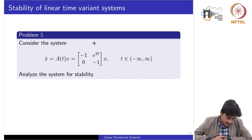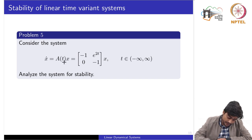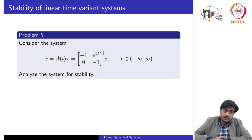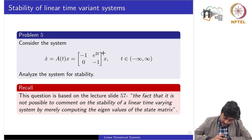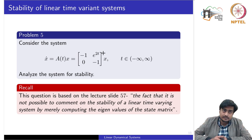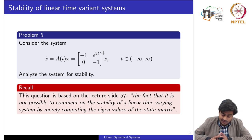Problem 5 deals with the stability of linear time-varying systems. Consider the homogeneous system ẋ = A(t)x where A(t) is a time-dependent matrix. Based on lecture slide 57, it is not possible to comment on the stability of a linear time-varying system by merely computing eigenvalues of the state matrix, unlike LTI systems where eigenvalue computation determines stability.